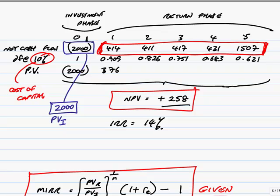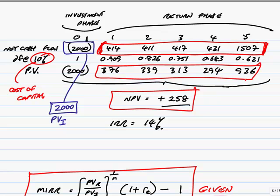The present value of those, well, we've done it earlier. Those are the present values we had earlier. The present value of the return phase, add those up, and the total is 2,258.